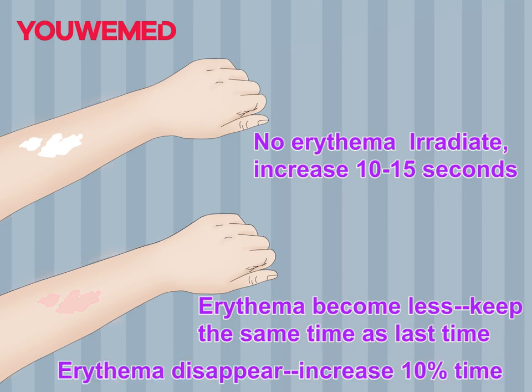If erythema disappears, increase the irradiation time by a set percentage. If erythema becomes less, keep the same time as the previous session.